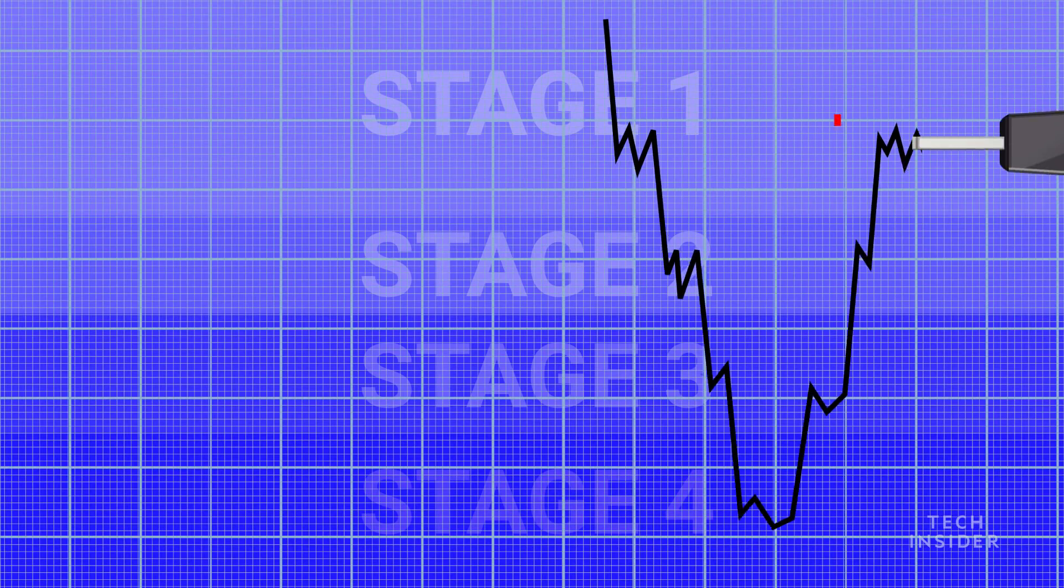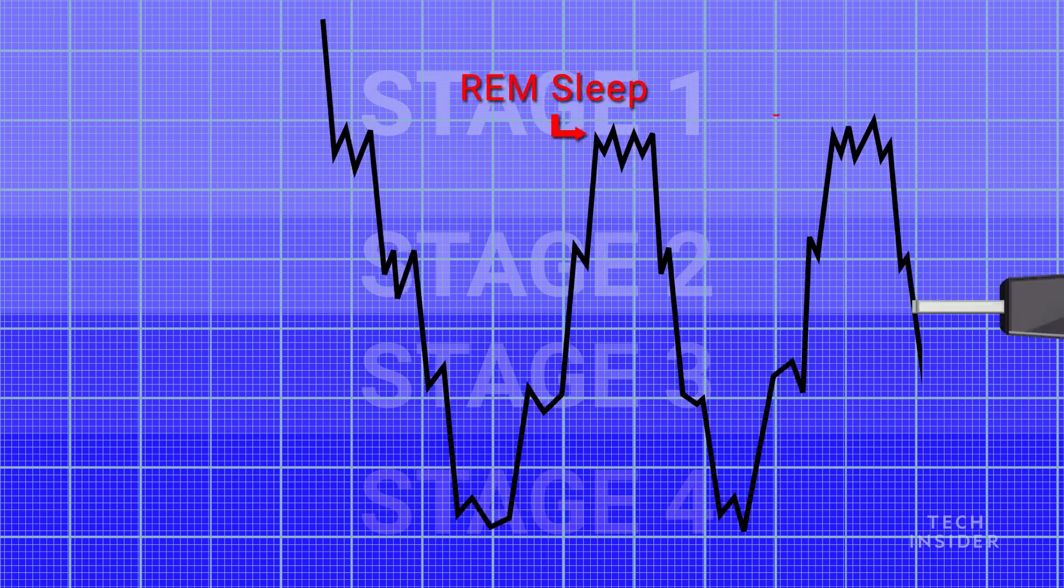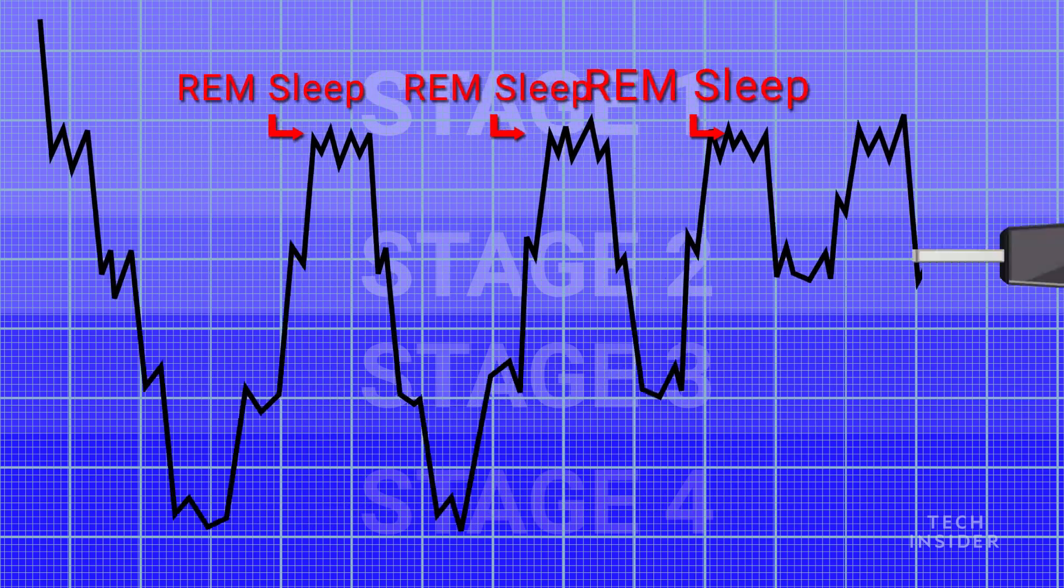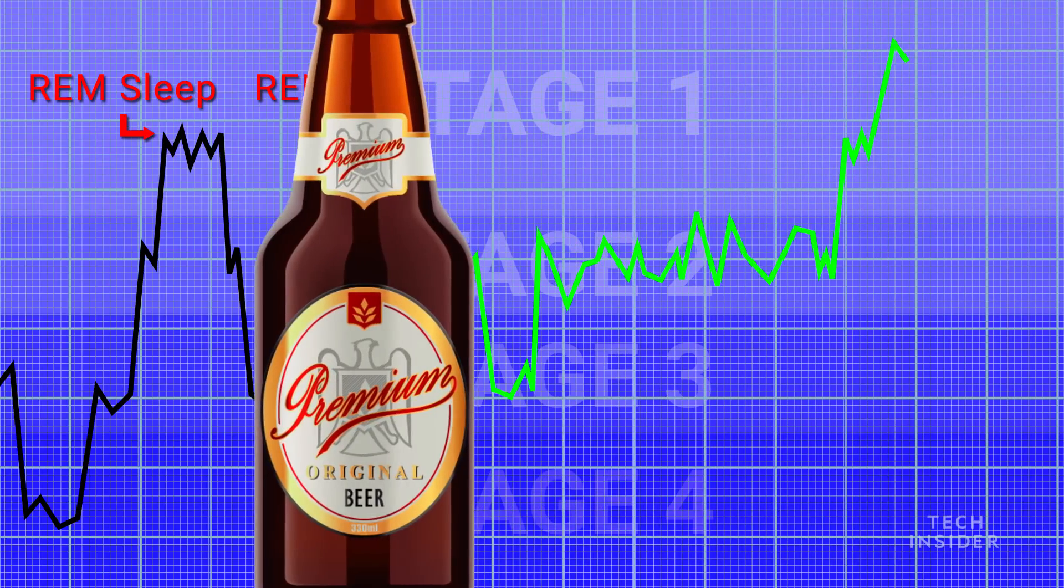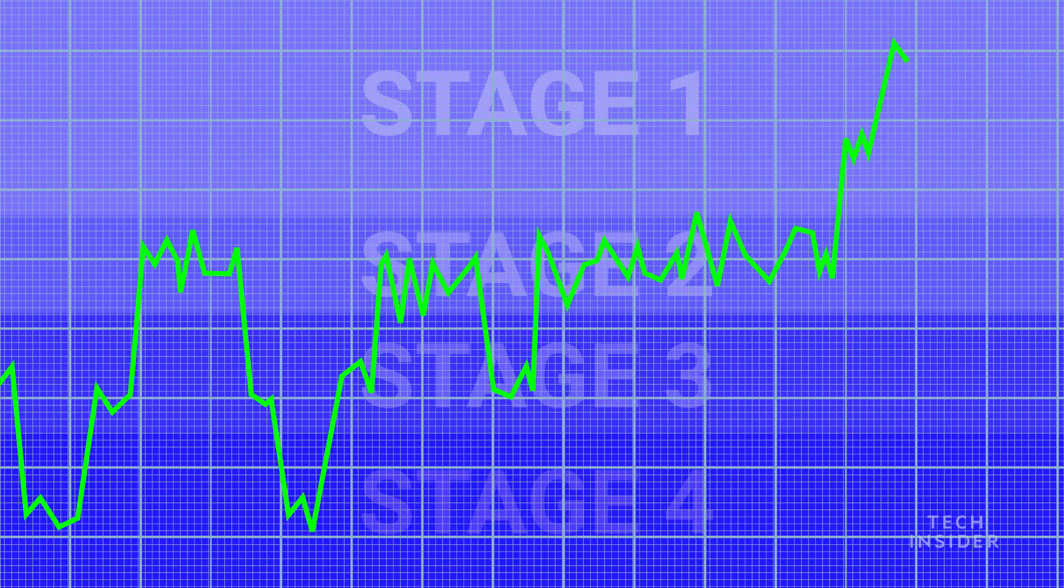So we have a sleep cycle where we cycle between non-REM and REM, and we cycle between that about five times a night. Alcohol blocks your ability to have REM sleep, but if you don't get REM, you're not going to feel as alert the next day, so nightcaps probably aren't the best thing.